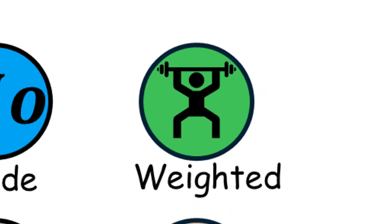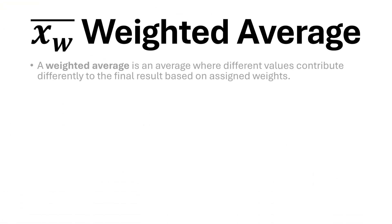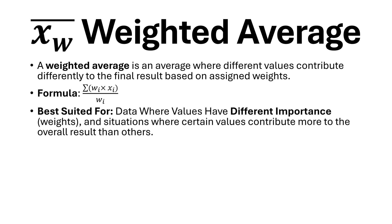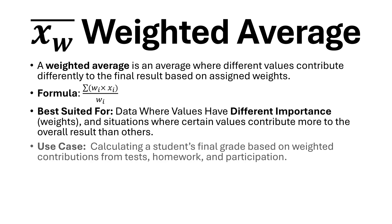Weighted average. A weighted average is an average where different values contribute differently to the final result based on assigned weights. The formula is as shown. Best suited for data where values have different importance or weights, and situations where certain values contribute more to the overall result than others. Use case: calculating a student's final grade based on weighted contributions from tests, homework, and participation.